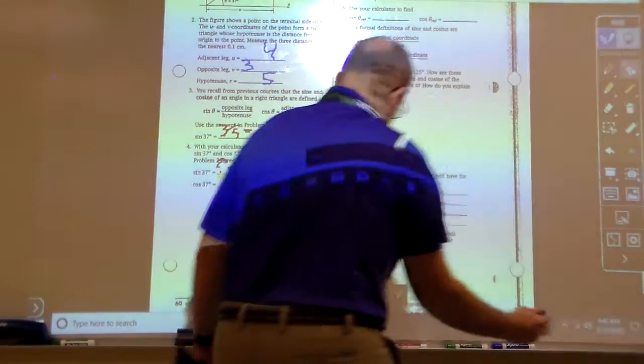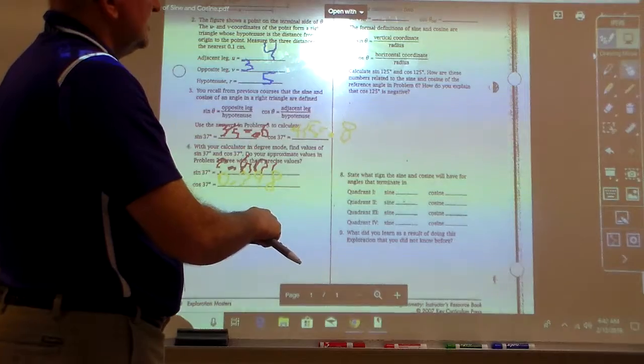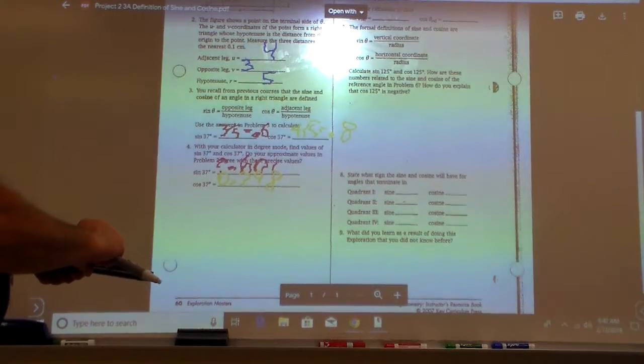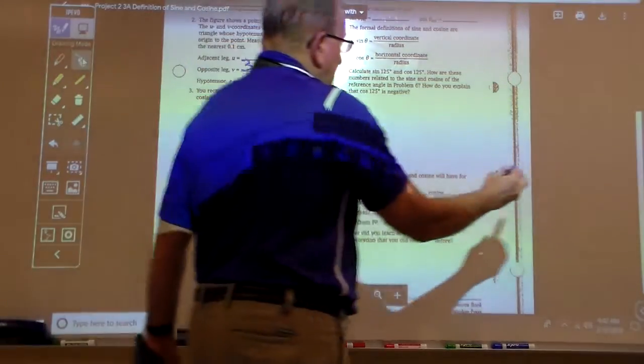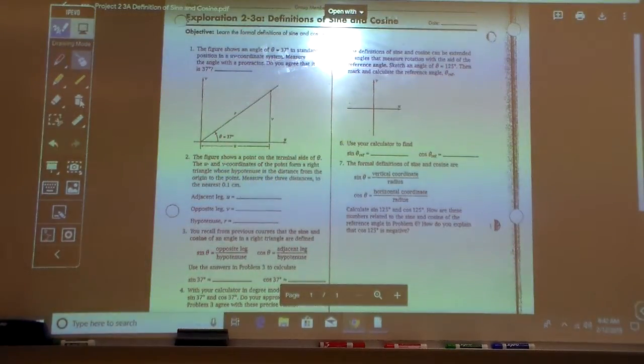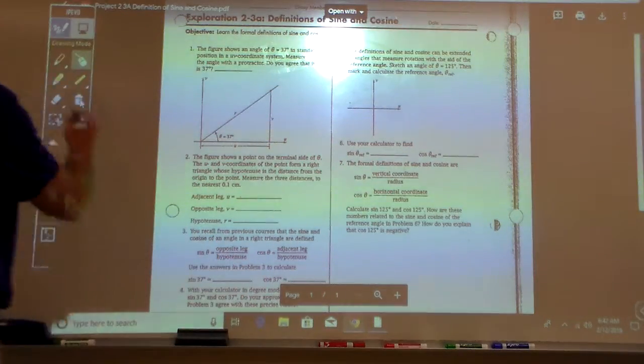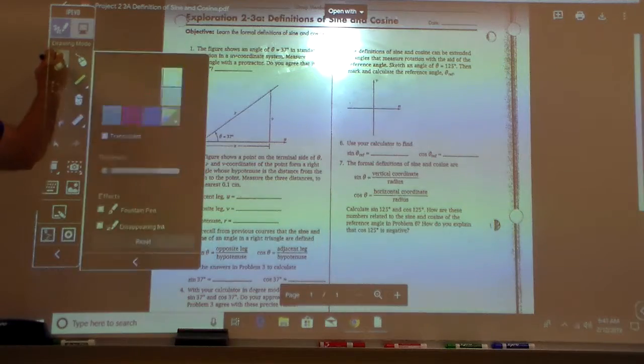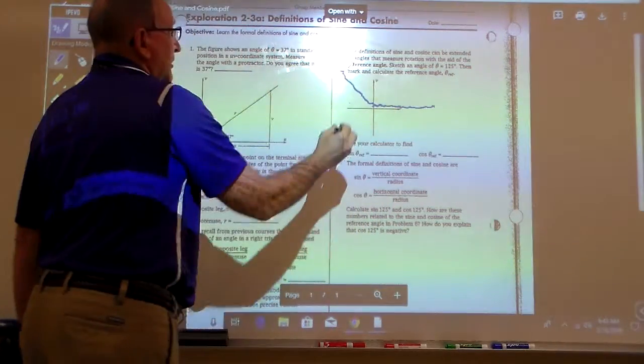Let's move this back to the other side. I want to do this side right here, because what I want to do is the following: I want to move this back up here to answer these questions here. First off, let's trash all that we have written. The definition of sine and cosine can be extended to angles that measure rotation with the aid of reference angles. Let's sketch one at 125 degrees. So let's sketch one at 125 degrees. I'll start with our angle right here, and about 125 degrees would be something like that right there, that's my regular angle.